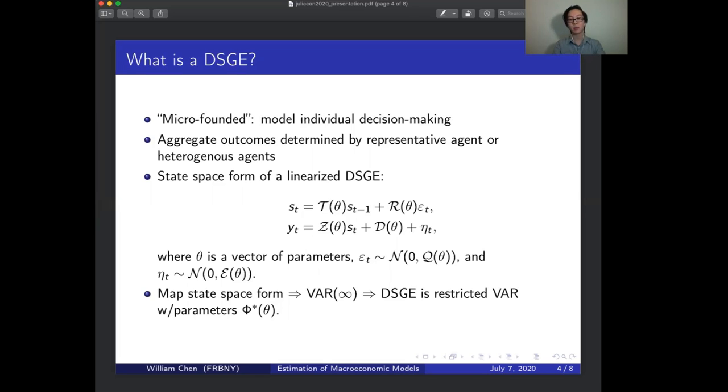Because of this linear state-space form, it turns out that you can actually map a DSGE to a VAR with infinite order and parameters phi star. Intuitively, the reason for this is that the state-space form of a DSGE implies today's observables depend on past states, so there is a real connection to past observables. In this sense, a DSGE is a restricted VAR that places additional constraints on how today's observables are going to be related to past observables.